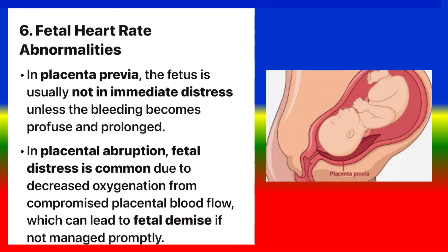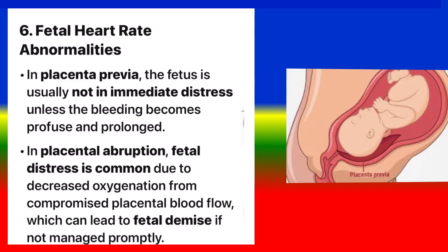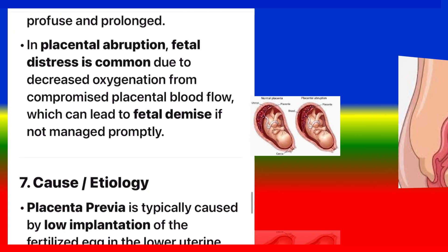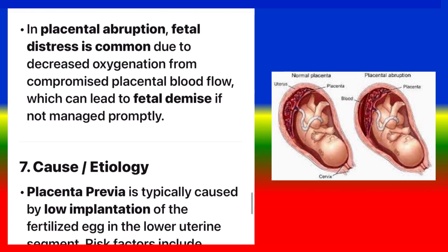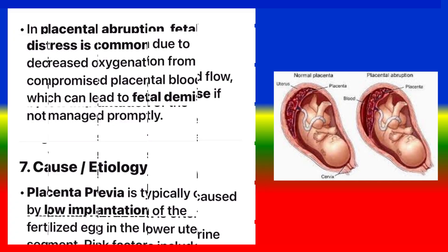Fetal heart rate abnormalities. In placenta previa, the fetus is usually not in immediate distress unless the bleeding becomes profuse and prolonged. In placental abruption, fetal distress is common due to decreased oxygenation from compromised placental blood flow, which can lead to fetal demise if not managed promptly.